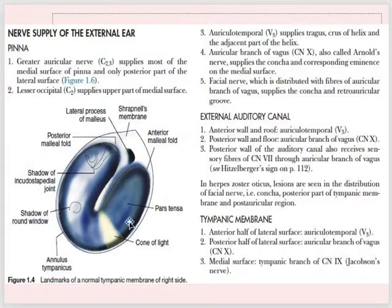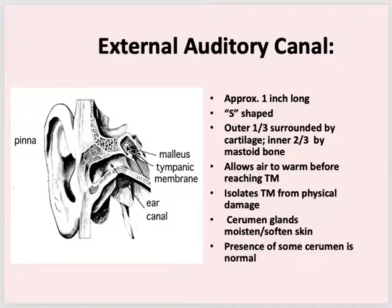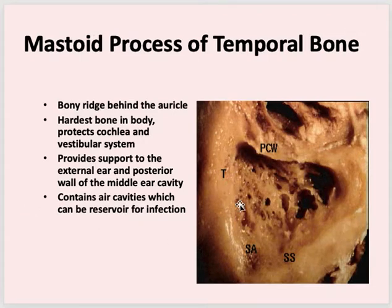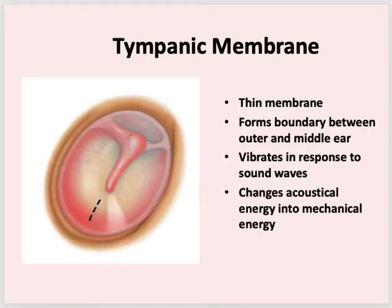On the back of your pinna there is a bony prominence which you can feel — that is the mastoid process, or the mastoid process of the temporal bone. Importantly, it has a lot of air cells. When you study otitis media, you will understand the importance of the mastoid because there is something called mastoiditis.